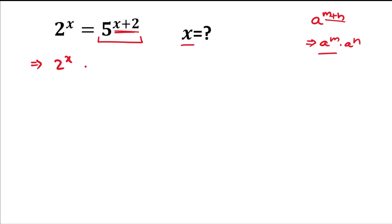According to this split, we'll rewrite the expression. On the left hand side we write 2^x as it is, and on the right hand side, since we have a plus value in the power, we write 5^x multiplied by 5^2.